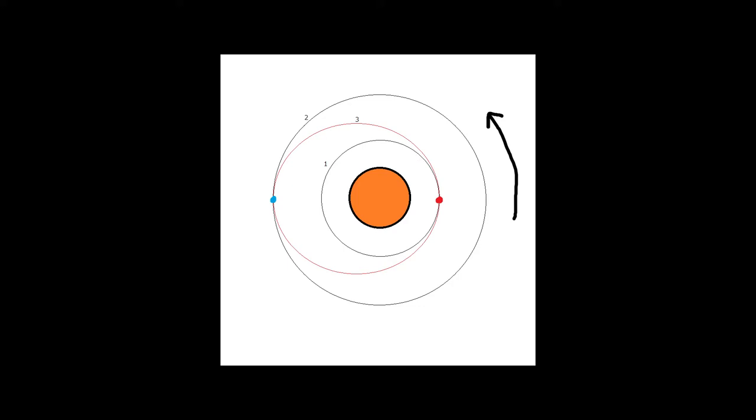And we literally get a transfer orbit. It's literally an orbit which transfers us to our desired orbit. In our case, this transfer orbit is labeled 3, this red orbit.